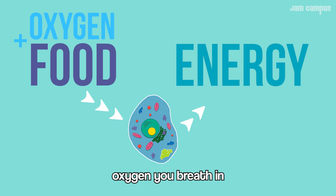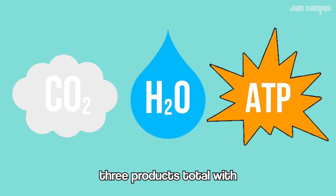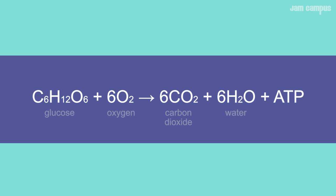In your body, cells turn food to energy — glucose from the food you eat, oxygen you breathe in, ATP energy. Releases carbon dioxide when you breathe, creates water when complete. Three products total with ATP energy: C6H12O6 plus 6 O2 forms into 6 CO2 plus 6 H2O plus energy as ATP.